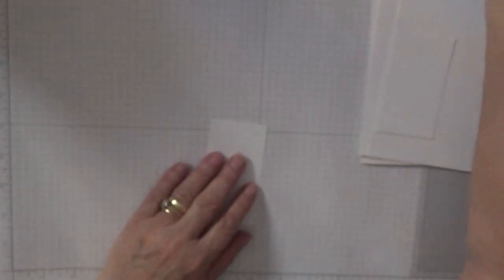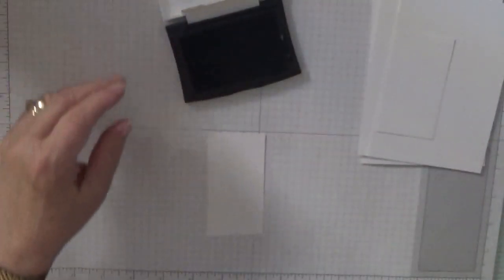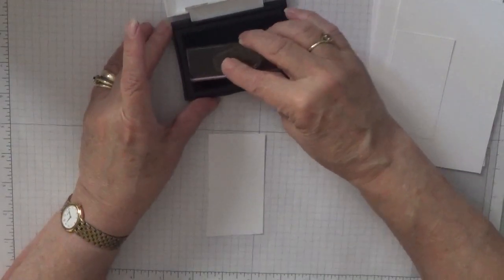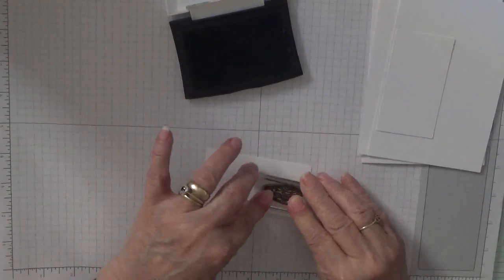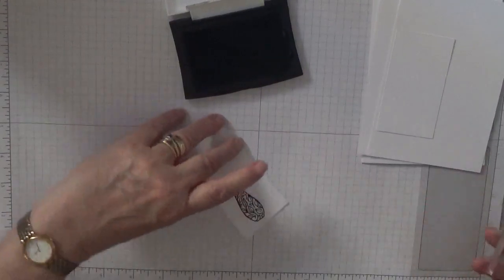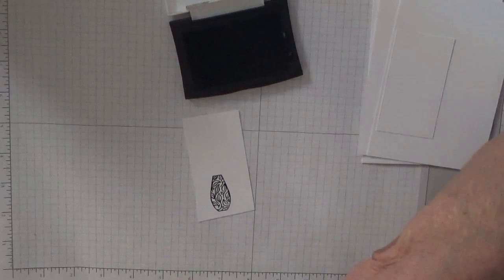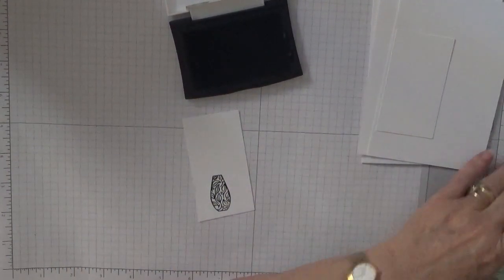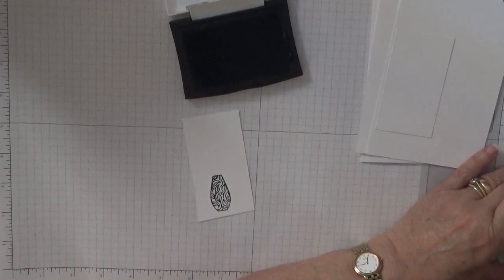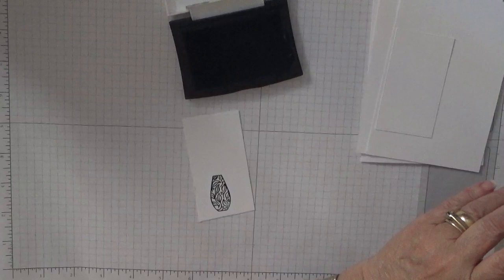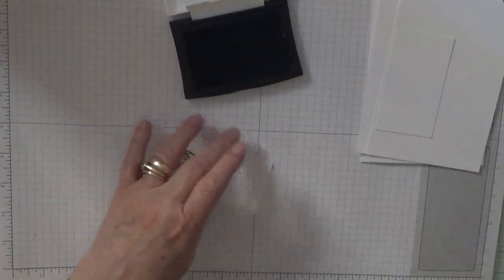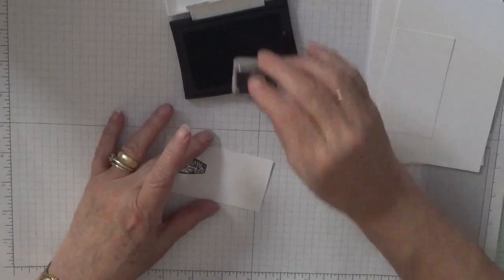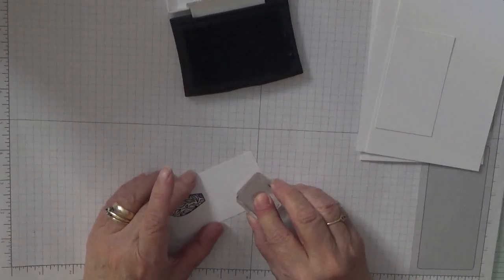To get started all we need to do is stamp the vase and the tulips. I did have a nice clean cloth yesterday. The tulips, we want three of these.